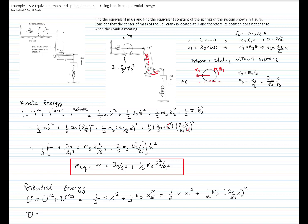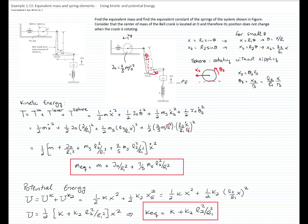Finally, rewriting the potential energy as one-half times the quantity k1 plus k2 times L2 squared over L1 squared, all multiplied by x squared. Therefore, the equivalent spring constant of the system is k1 plus k2 times L2 squared over L1 squared. We have now found both the equivalent mass and the equivalent spring constant of the system.